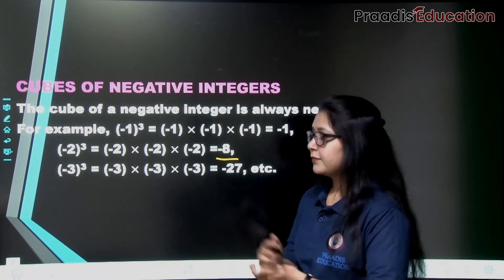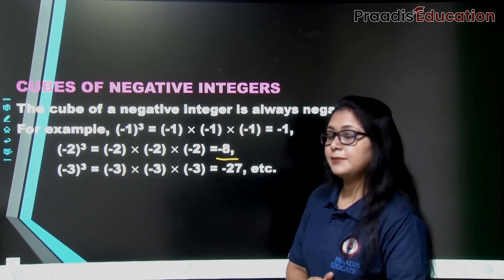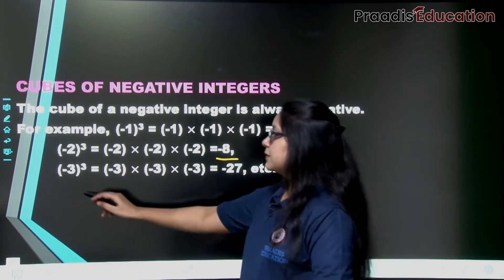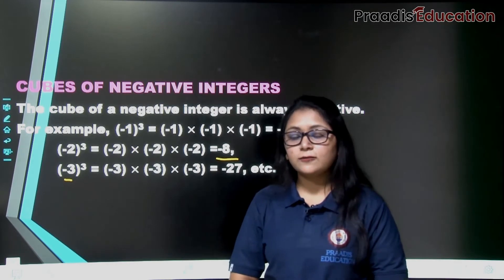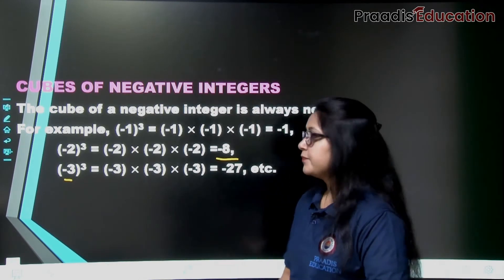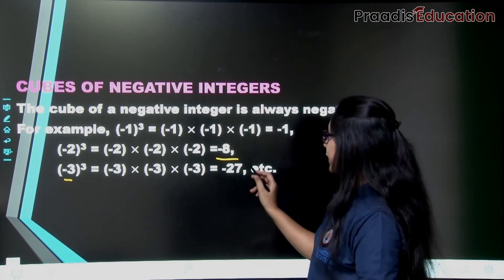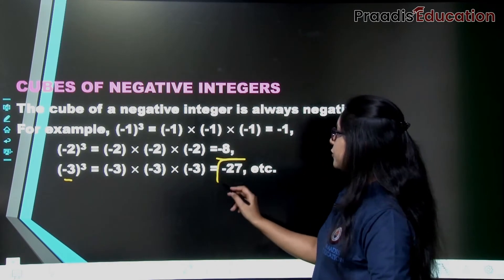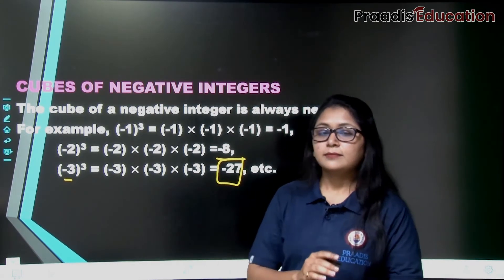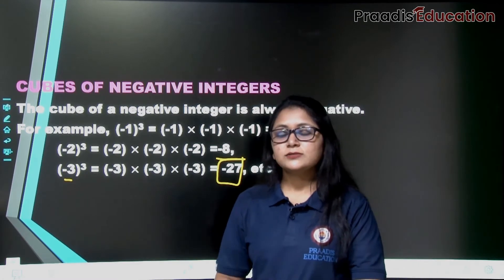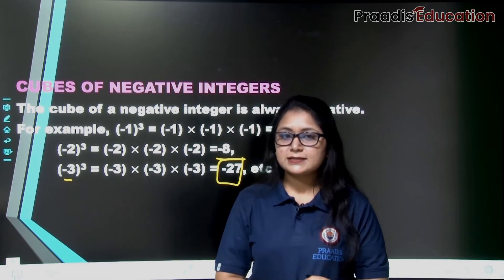There is another example: when we find the cube of -3, the cube of -3 gives us -27.